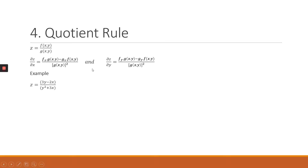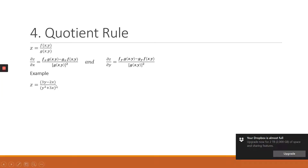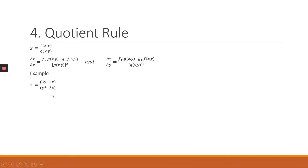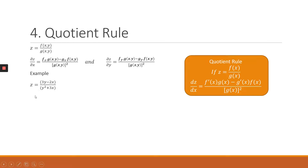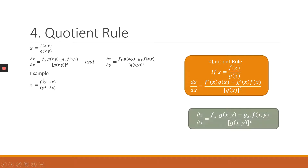Looking at an example: we are given z where the numerator function is 3y minus 2x, and the denominator function is y squared plus 3x. You can see it's a fraction where we have both x and y as independent variables. So we have to identify our f function and our g function. In this example we have both x and y, unlike the single-variable case where f and g each depend on one variable only.